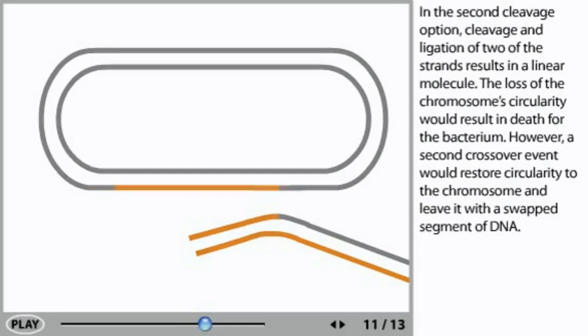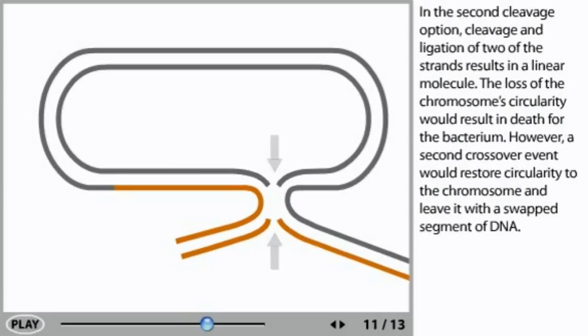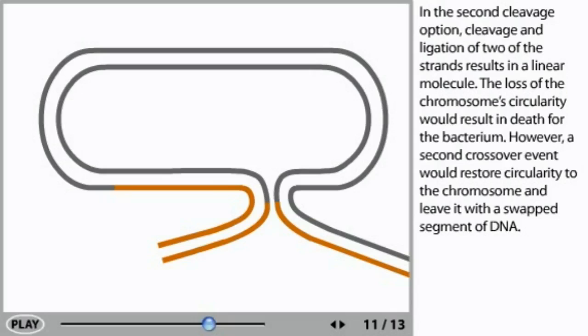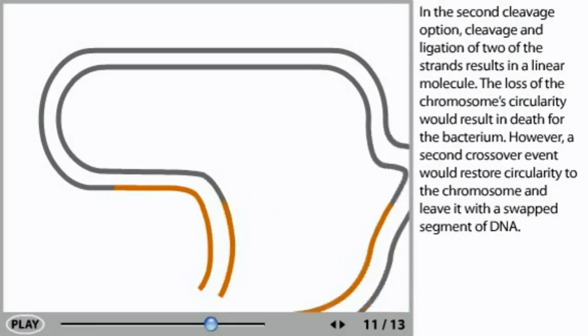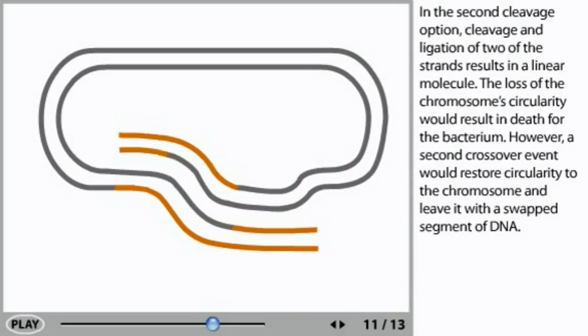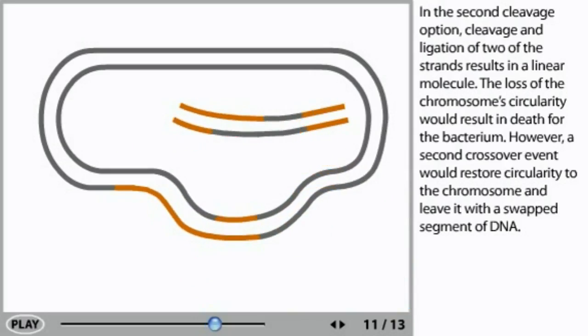In the second cleavage option, cleavage and ligation of two of the strands results in a linear molecule. The loss of the chromosome's circularity would result in death for the bacterium. However, a second crossover event would restore circularity to the chromosome and leave it with a swapped segment of DNA.